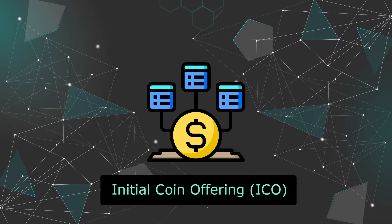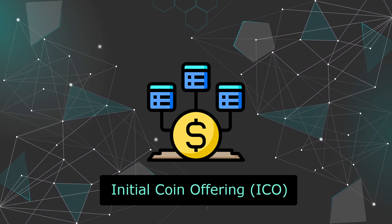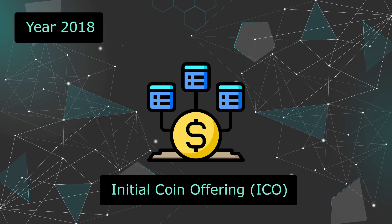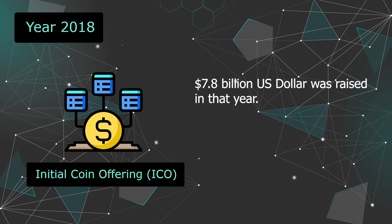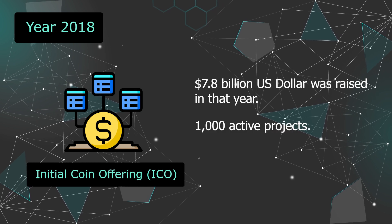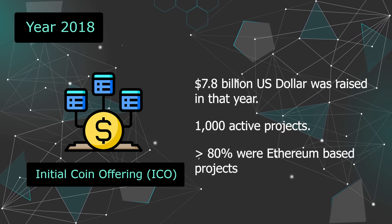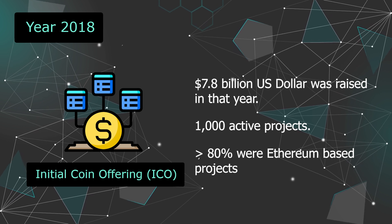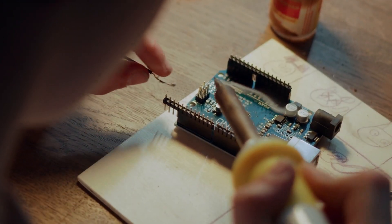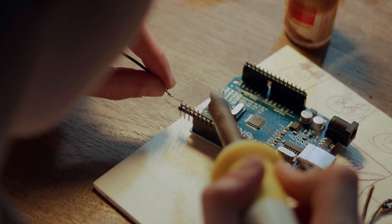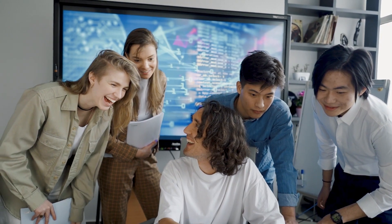The popularity of crowdfunding early-stage projects through blockchain networks reached a record number in 2018. A total of $7.8 billion was raised for over 1,000 projects that year, with over 80% of them relying on the Ethereum blockchain to create and issue tokens to investors. As a result, despite the technical limitations of the platform, dApp developer activity on Ethereum continued to thrive.